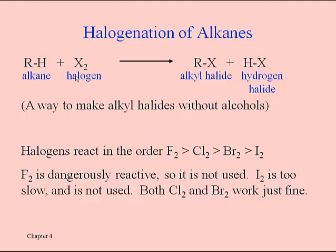Even though halogens come two at a time, like Cl2 or Br2, notice that only one of the two halogens ends up forming a bond to the carbon. The other halogen ends up bonded to the hydrogen that gets removed. If you add extra Cl2 or Br2, you can certainly do further substitutions — in fact, you can replace all of the hydrogens in an alkane if you want, although generally we're only replacing them one at a time.